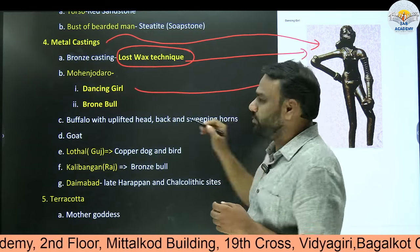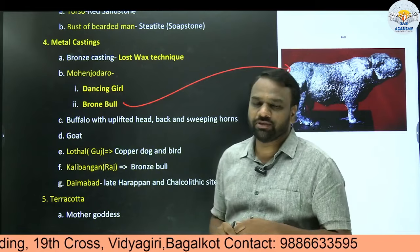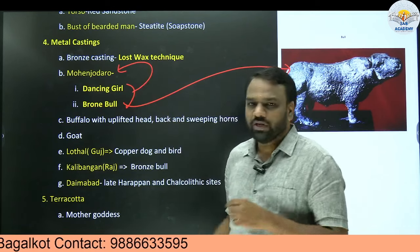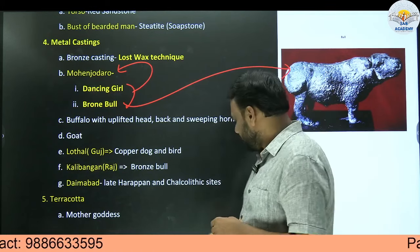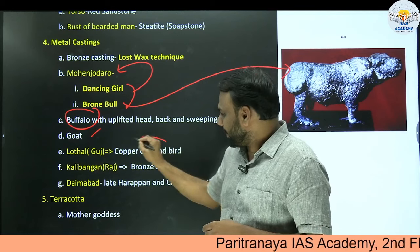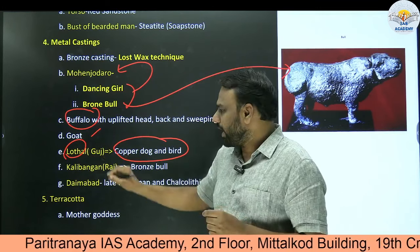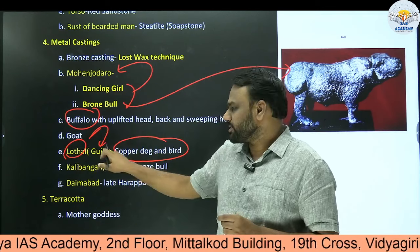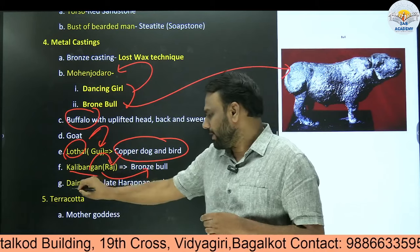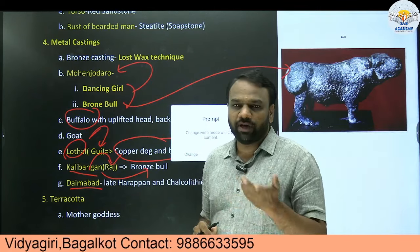Examples of the lost wax technique include the dancing girl and the bronze bull, both present at Mohenjo-daro, which is located in Pakistan. At a few other sites, we have got metal castings of buffalo and goat as well. Copper castings of dog and bird have been found at Lothal, which is present in the state of Gujarat. In Kalibangan, we have got a bronze bull — Kalibangan is present in Rajasthan. Daimabad, also an Indus Valley site, has also yielded metal castings of the Indus Valley period.